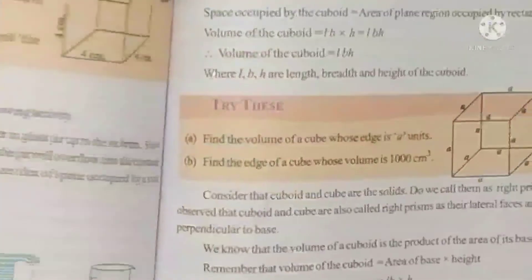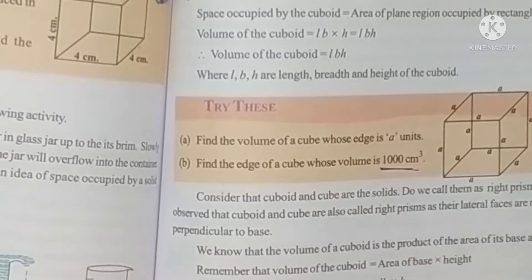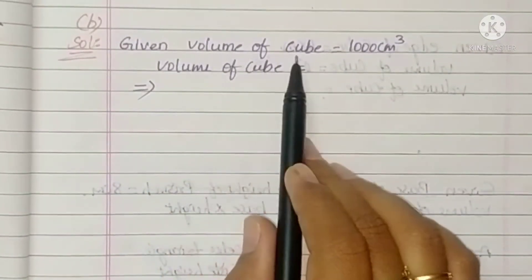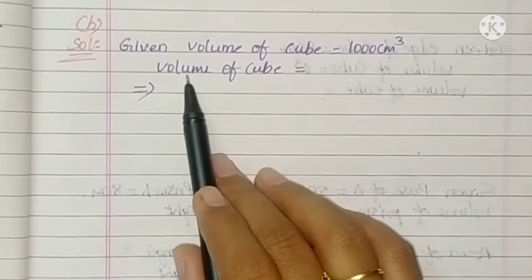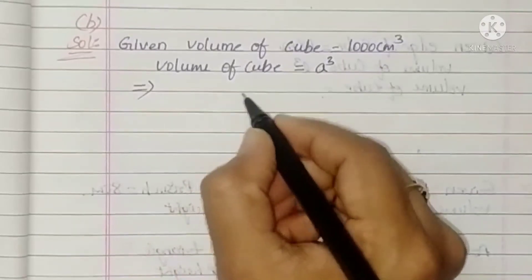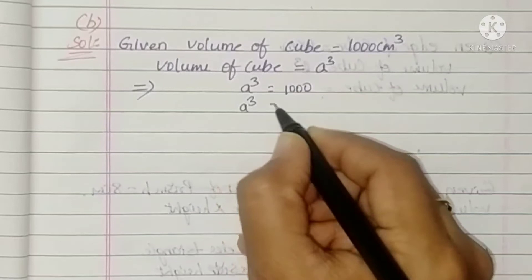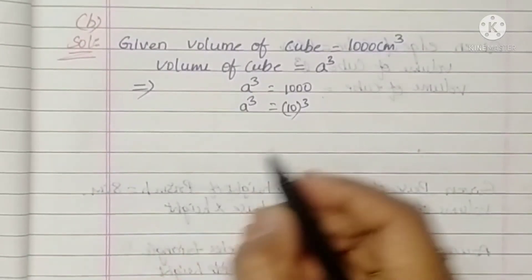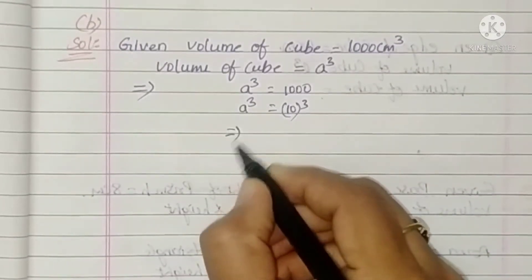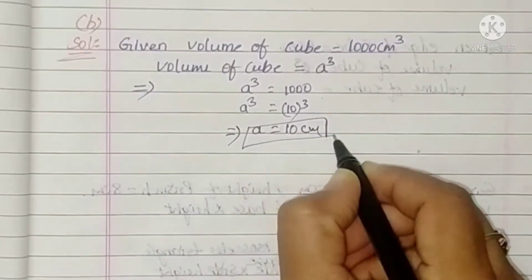Next, in the same 'Try This', second part: find the edge of the cube whose volume is 1000 cubic centimeters. Volume of cube = A³. So A³ = 1000. We can write 1000 as 10³. Since the bases are equal, the exponents are equal, so A = 10 centimeters.